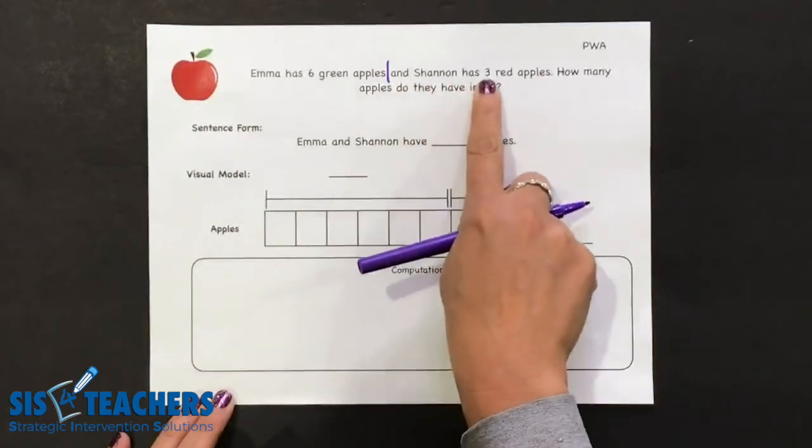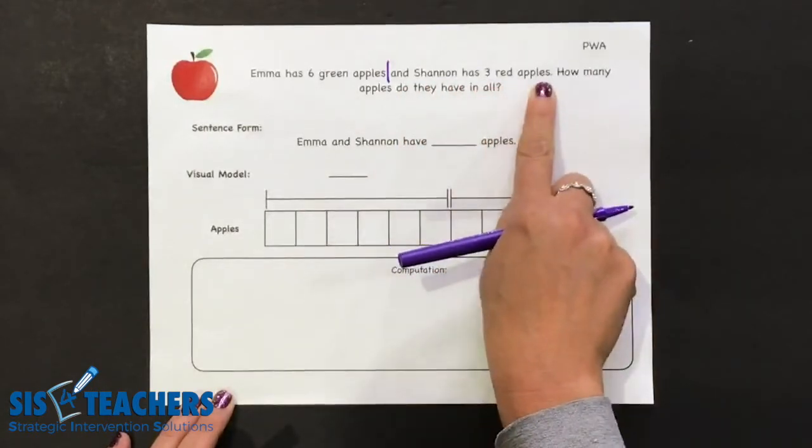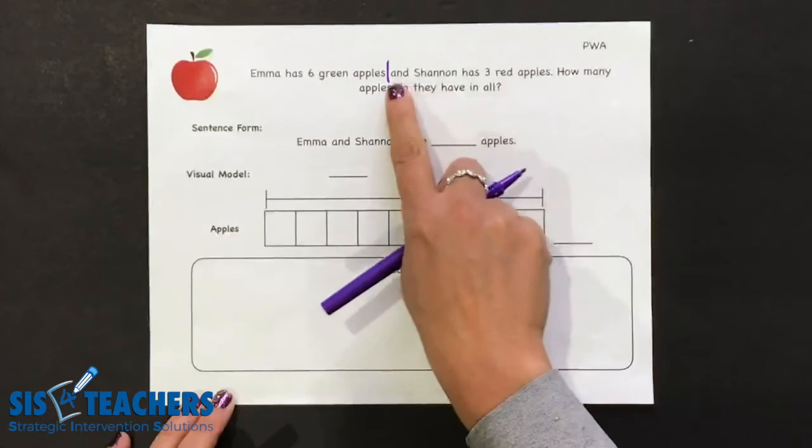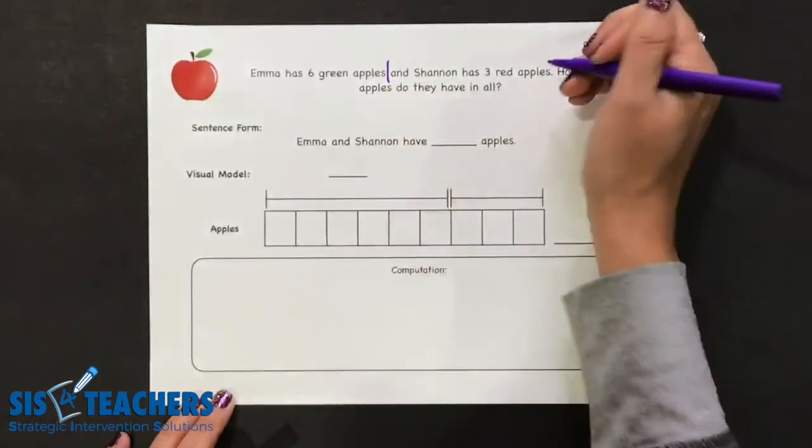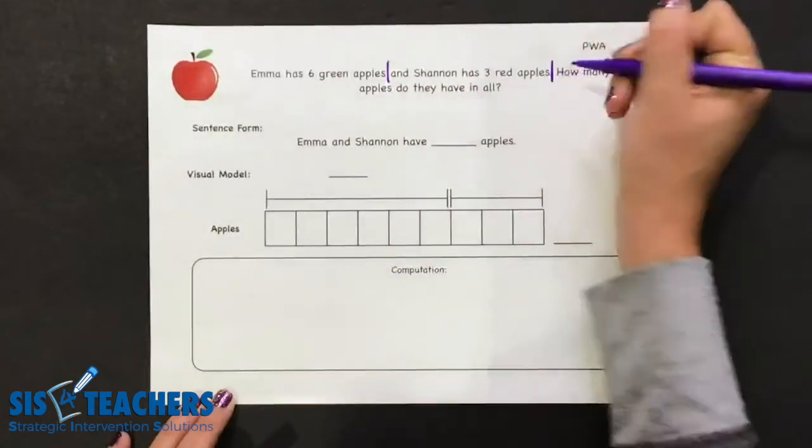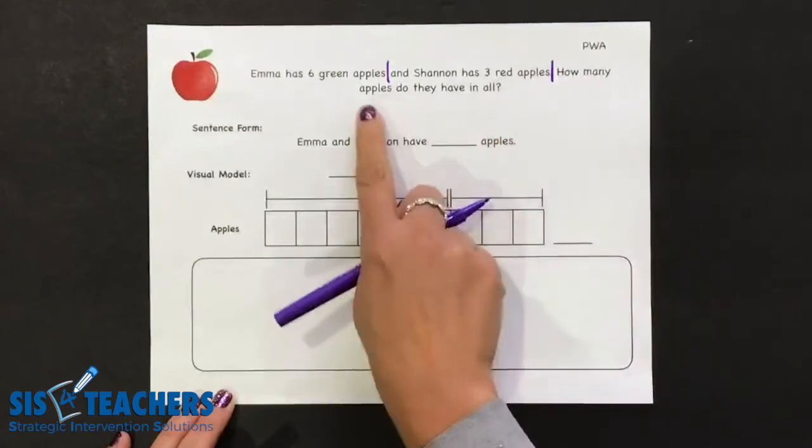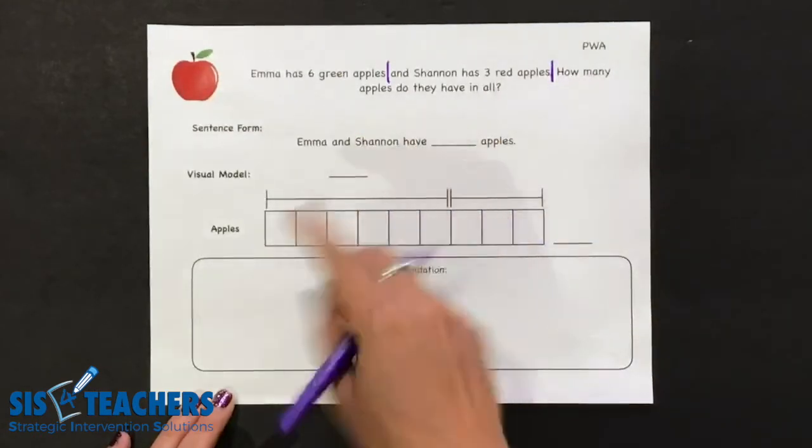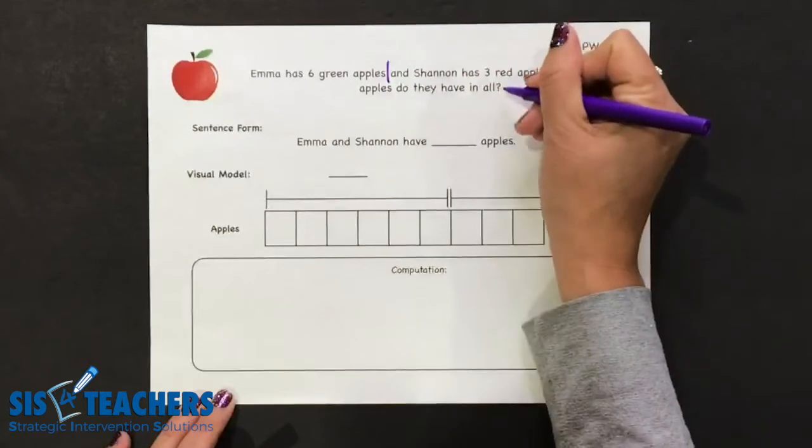And Shannon has three red apples. I heard more information, so we repeat that back. And Shannon has three red apples. The kids get excited about saying chunk. How many apples do they have in all? Again, repeated. How many apples do they have in all? Chunk.